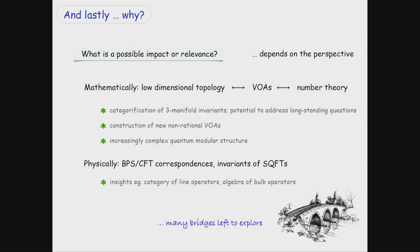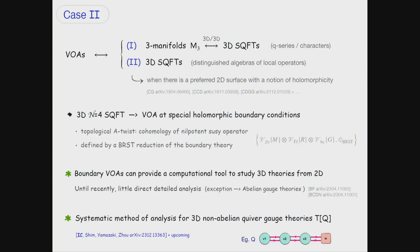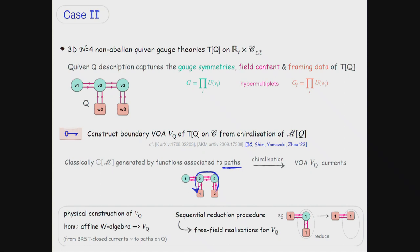In case 2, the identification of vertex operator algebras in case 1 relied only on Q-series functions; a more fundamental relation would be at the level of underlying vector spaces. In the case of 3D N=4 non-abelian quiver gauge theories, a topological twist allows identifying a vertex operator algebra on the boundary by paralyzing an underlying classical geometry. By looking at sheaves of holomorphic vertex operator algebras, the global sections define the VOAs concretely, opening the door to many exciting generalizations.